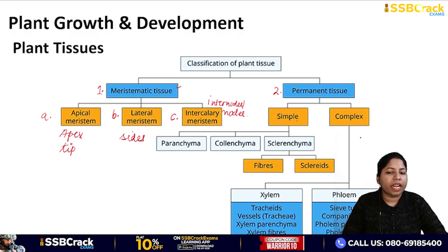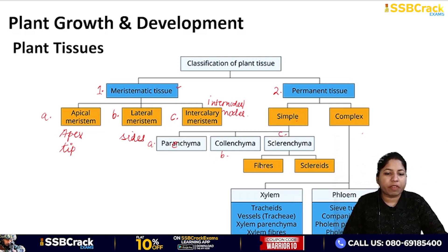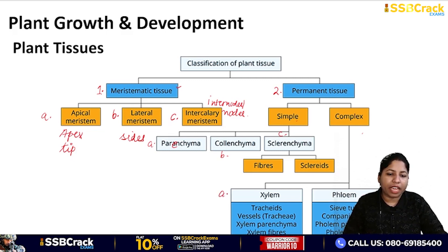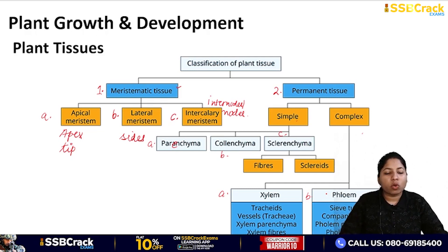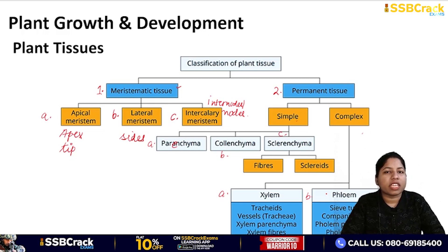The permanent tissues are of two types: simple and complex. Parenchyma, colenchyma, and sclerenchyma are the three simple permanent tissues. Sclerenchyma is further divided into fibers and sclereids. The complex permanent tissues are divided into xylem and phloem. Now we need to understand how meristematic tissue and permanent tissue are formed.